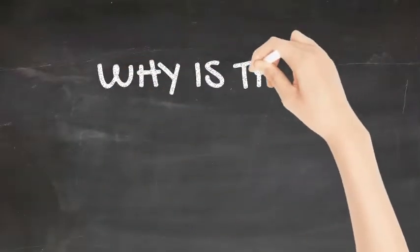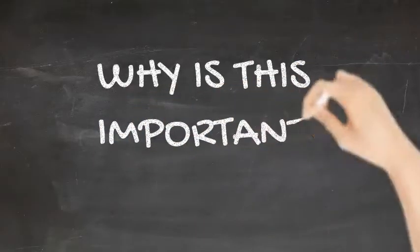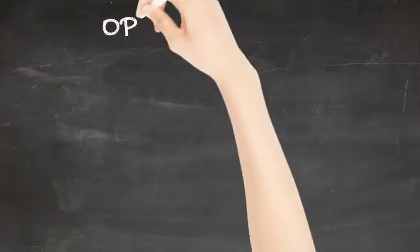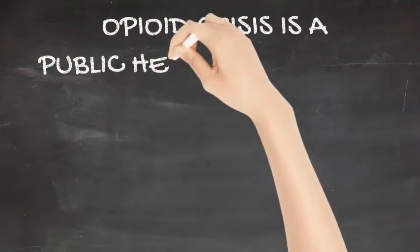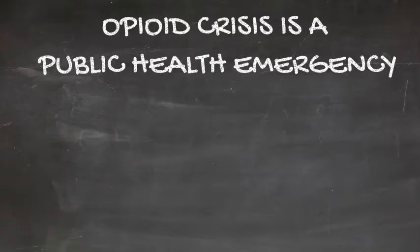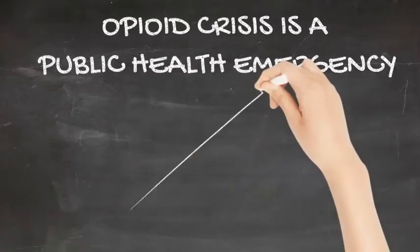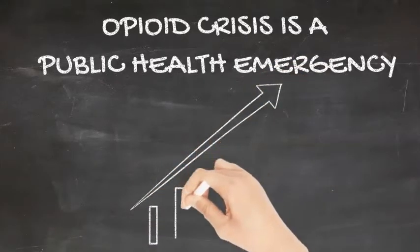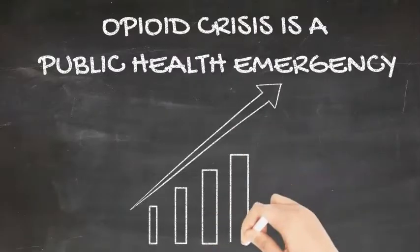To start us off, I am going to address the question, why is this important? In 2017, the opioid epidemic was declared a public health emergency. Opioid-related deaths are growing exponentially every year and rose 25% in Ontario in the first few months of the COVID-19 pandemic.